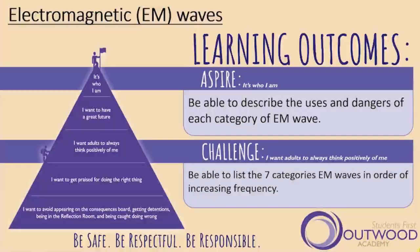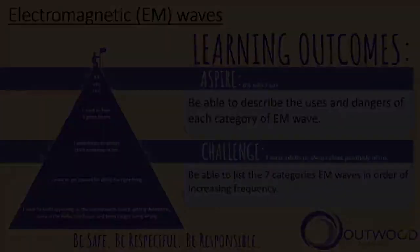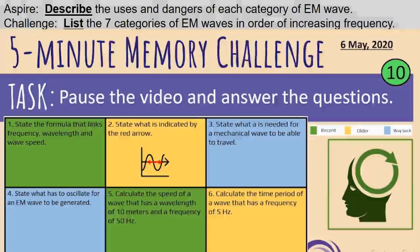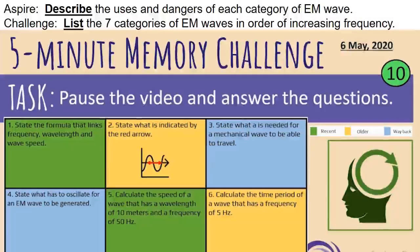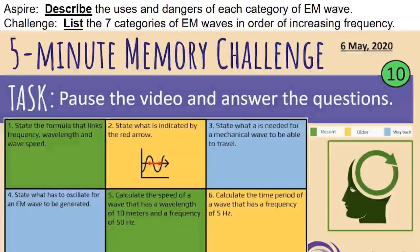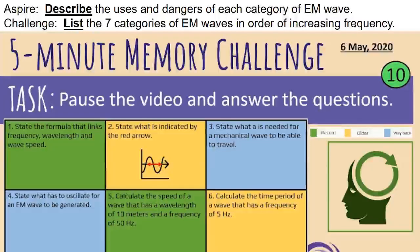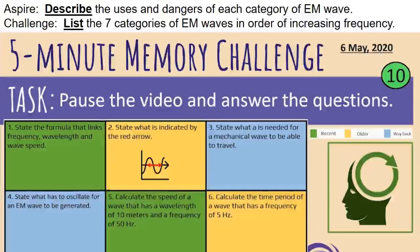The Aspire objective is that you are able to describe the uses and dangers of each category of electromagnetic wave. The command word there is 'describe', which just means to say what it is — so you just need to say what the uses are and what the dangers are of each EM wave. There are seven of them. Before we jump into the new stuff, it's really important for learning over time that you recall what you have already learned and practice that process of thinking about what you've learned previously.